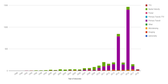TESS was launched on April 18, 2018, and is planned to survey most of the sky by observing strips defined along the right ascension lines for 27 days each. Each area surveyed is 27 by 90 degrees. Because of the positioning of sections, the area near TESS's rotational axis will be surveyed for up to one year, allowing for the identification of planetary systems with longer orbital periods.